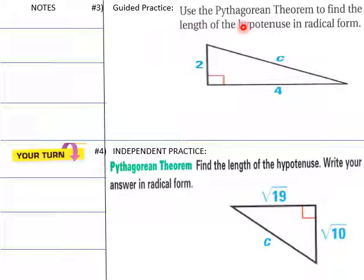Guided practice: Use the Pythagorean theorem to find the length of the hypotenuse. We know our a, we know our b, so we can find our c. Same thing down here, students. Find your hypotenuse. You know your a, you know your b.